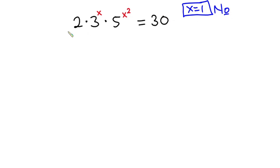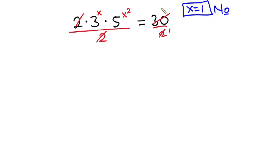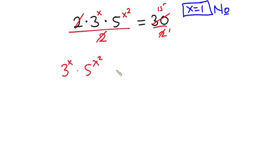First, let's divide each side of this equation by 2 so the 2s cancel. 2 goes into itself once and into 30 fifteen times, so this equation becomes 3 to the power x times 5 to the power x squared equals 15.